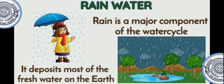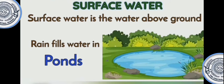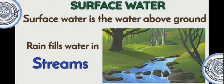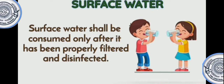Rain is the main source of water and deposits most of the water on the earth. Surface water is the water that we can see on the ground, such as rivers, lakes, ponds, streams, seas, and oceans. Surface water should be consumed only after it has been properly treated and disinfected.